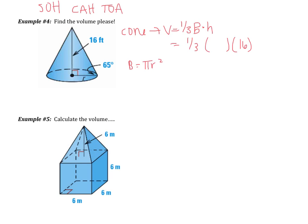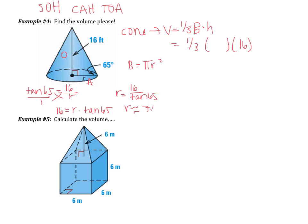I'm going to have to use trig. 16 is opposite the 65 degrees, and r is the adjacent. Opposite and adjacent — that's going to be tangent of 65 equals 16 over r. When I do cross products, I get 16 equals r times the tangent of 65. So r ends up being 16 divided by tangent of 65. I get r to be 7.46.